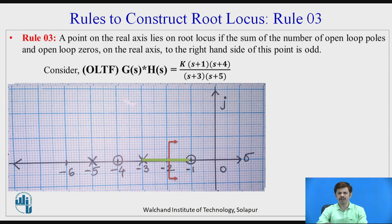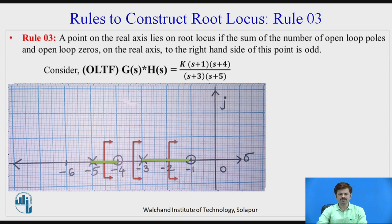So root locus exists between minus 1 and minus 3. Between minus 3 and minus 4, the count on the right-hand side is 2, which is even, so root locus does not exist there. Between minus 4 and minus 5, the count is 3 which is odd, so root locus exists between minus 4 and minus 5. Beyond minus 5, the count is 4 which is even, so root locus does not exist beyond minus 5. Therefore root locus exists between minus 1 and minus 3, and between minus 4 and minus 5.